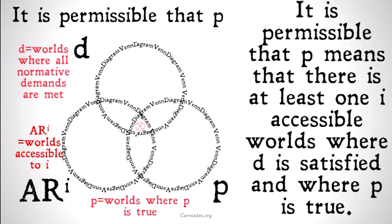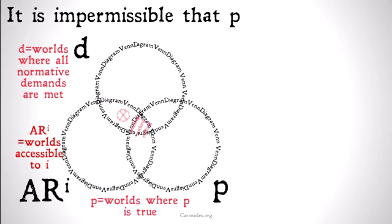It's permissible that P. It's going to look very similar, but this time instead of ruling out that area, we're just going to say that there's at least one world where P is true, all normative demands are met, and that world is accessible to I. It's permissible that P means there's at least one I-accessible world where D is satisfied and where P is true.